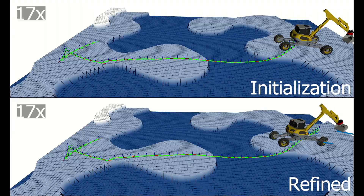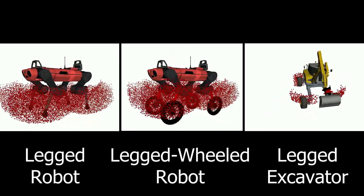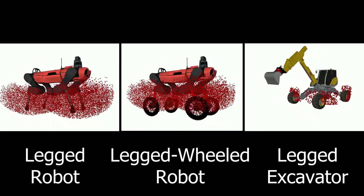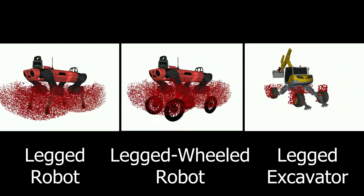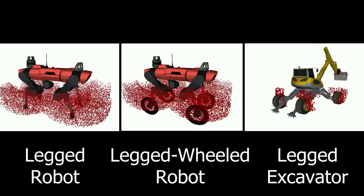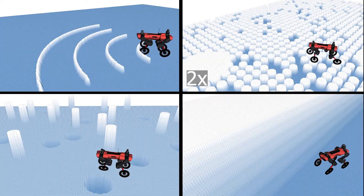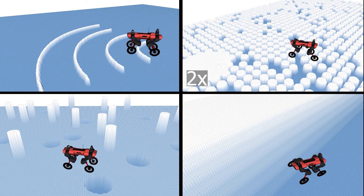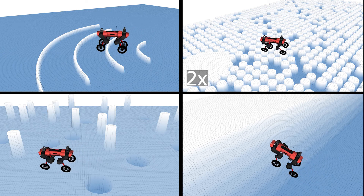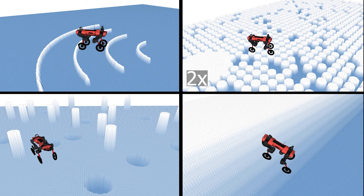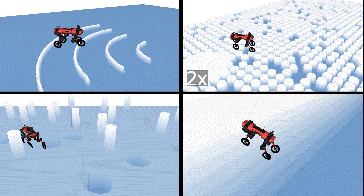To speed up the sampling based planner we pre-compute the limb roadmaps offline. A limb roadmap stores the mapping between joint configuration space and Cartesian space. We can use these roadmaps at runtime to rapidly determine good footholds, collisions, and stability criteria. Each limb has a separate roadmap expressed in the base frame. With the use of a roadmap, the RRT based planner finds initial solutions in less than one second.